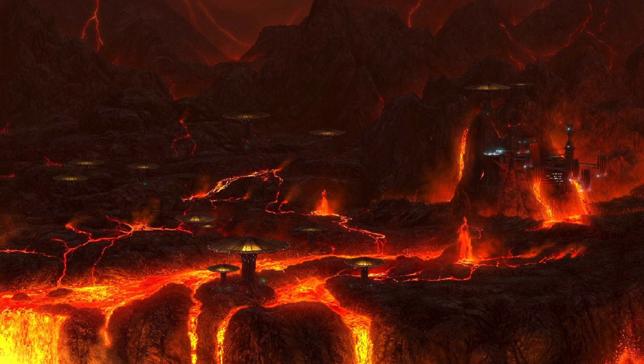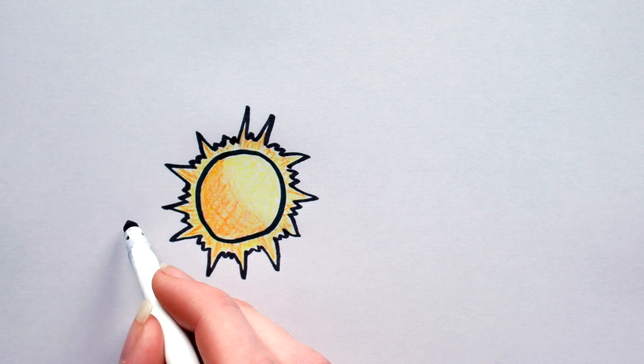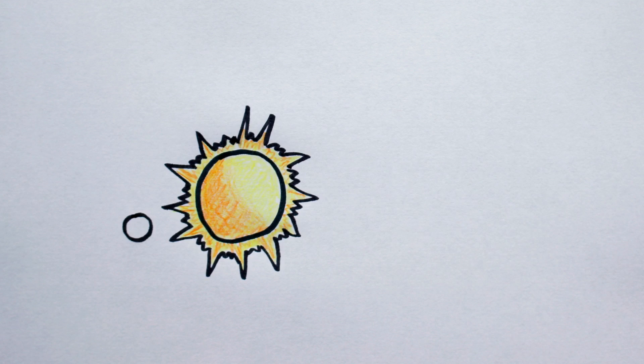Lava planets like Mustafar are planets covered in global lava flows. Such worlds would probably be located very close to their host stars, where the temperatures and tidal forces are such that the planet's surface will never fully solidify.